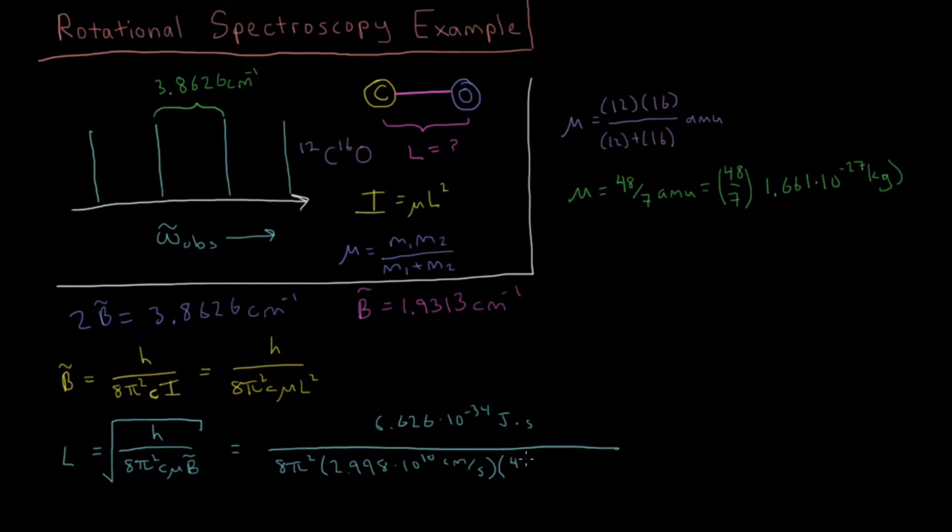The reduced mass is 48 over 7 times the atomic mass unit, 1.661 times 10⁻²⁷ kilograms. And then finally, our value of B̄, which was half of the distance between adjacent peaks, is 1.9313 wavenumbers, or inverse centimeters. And we need to take the square root of everything in here.